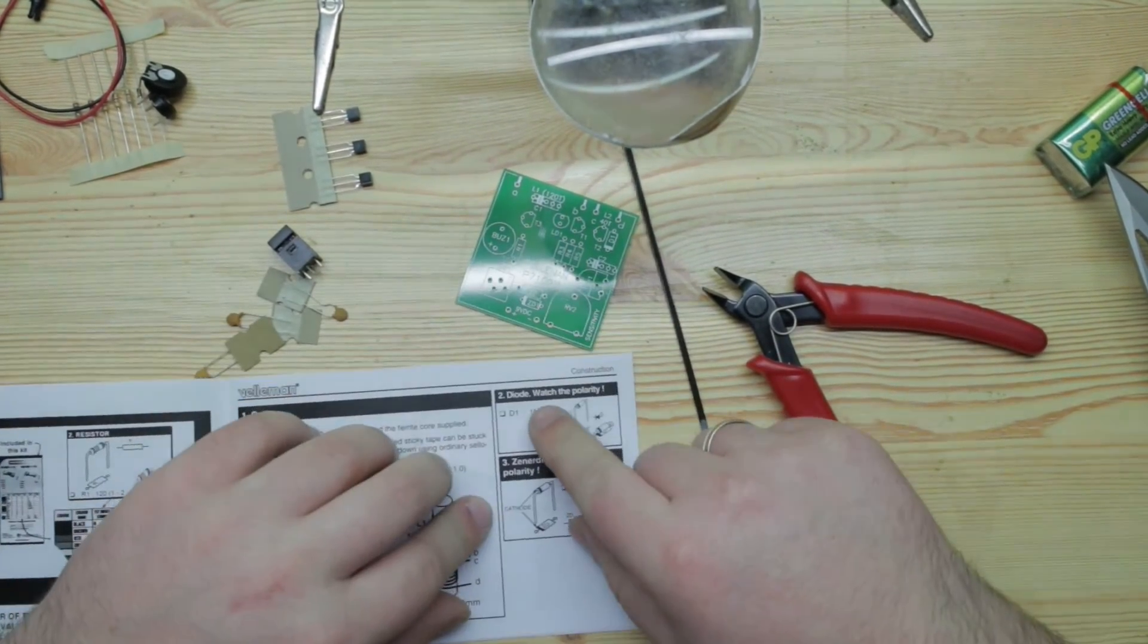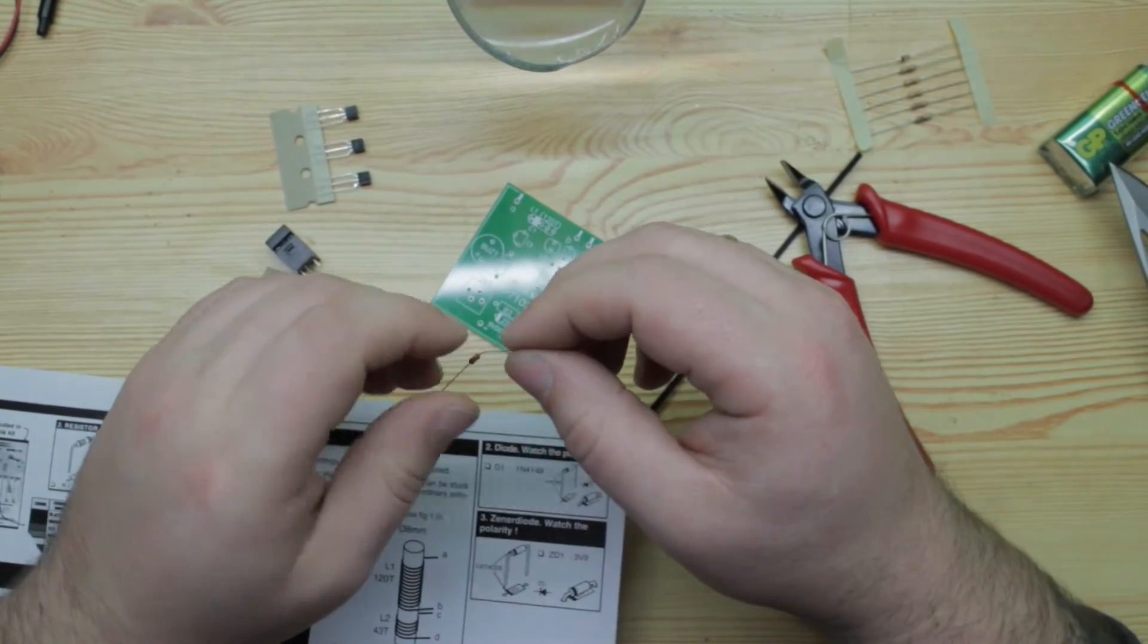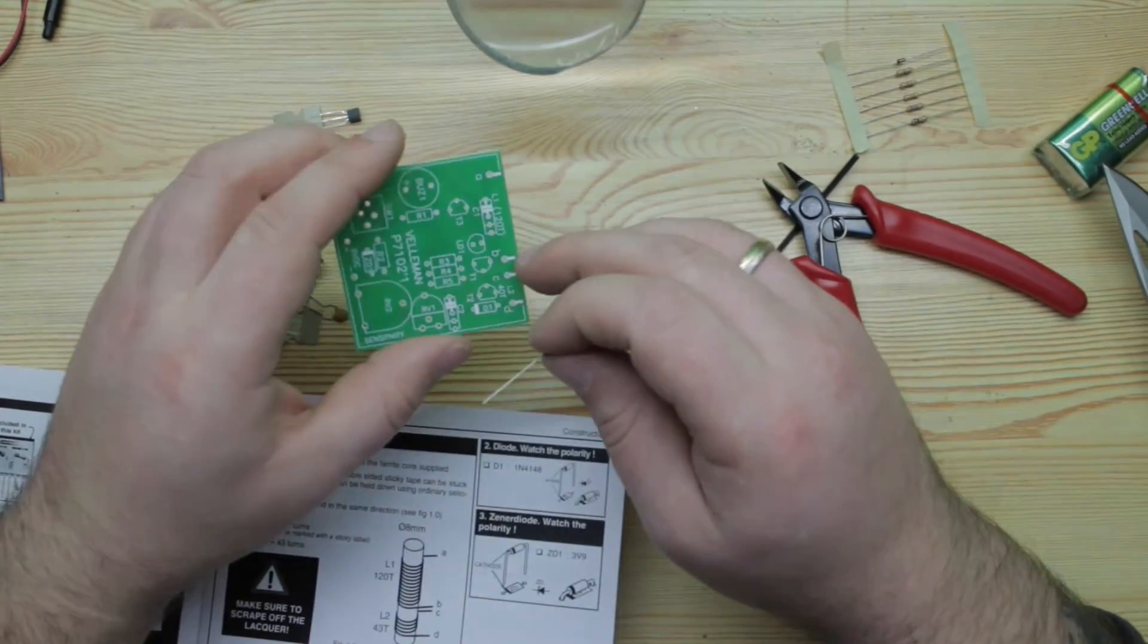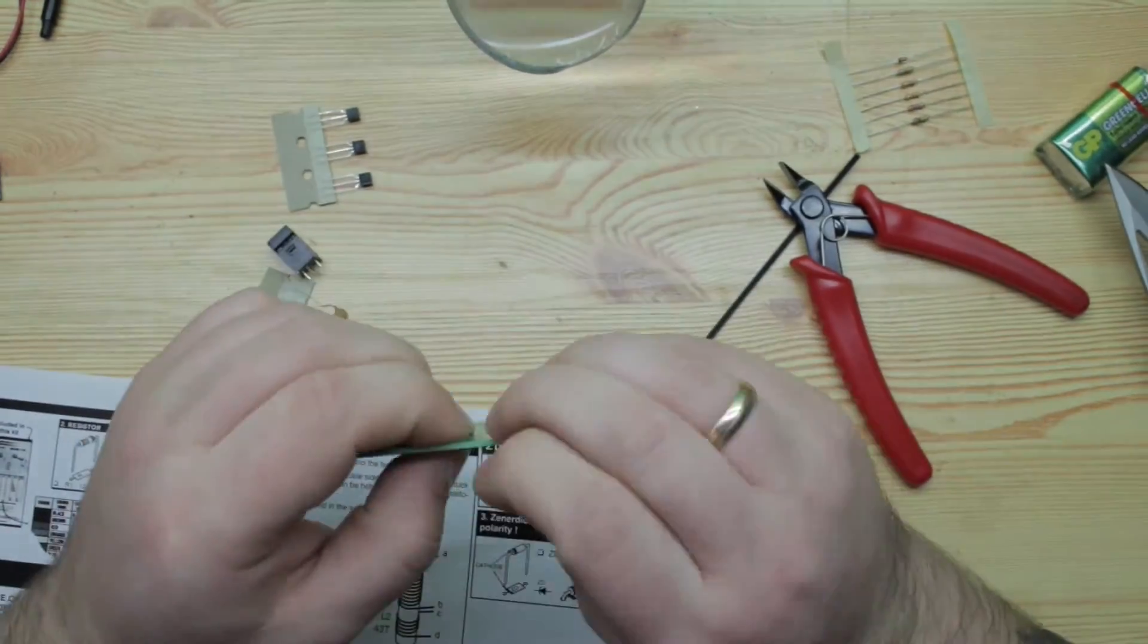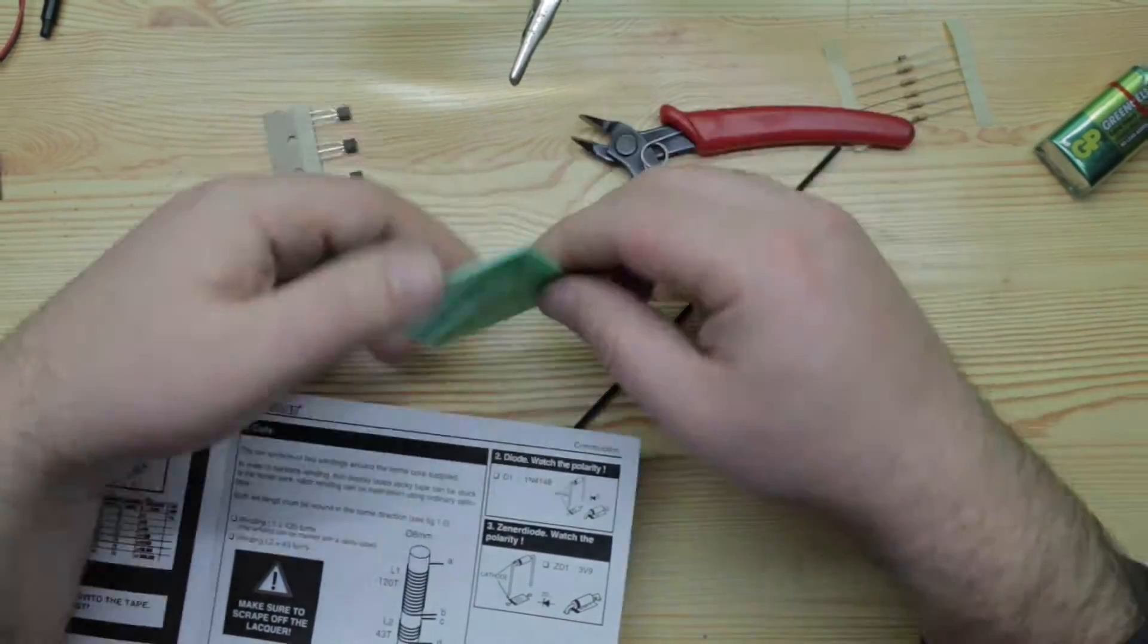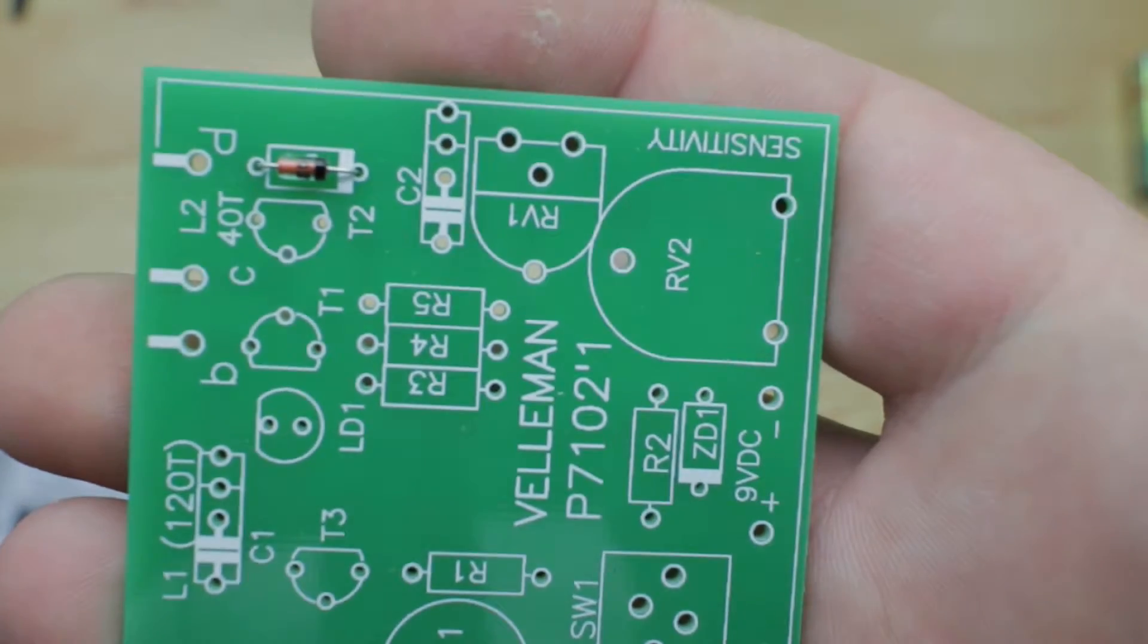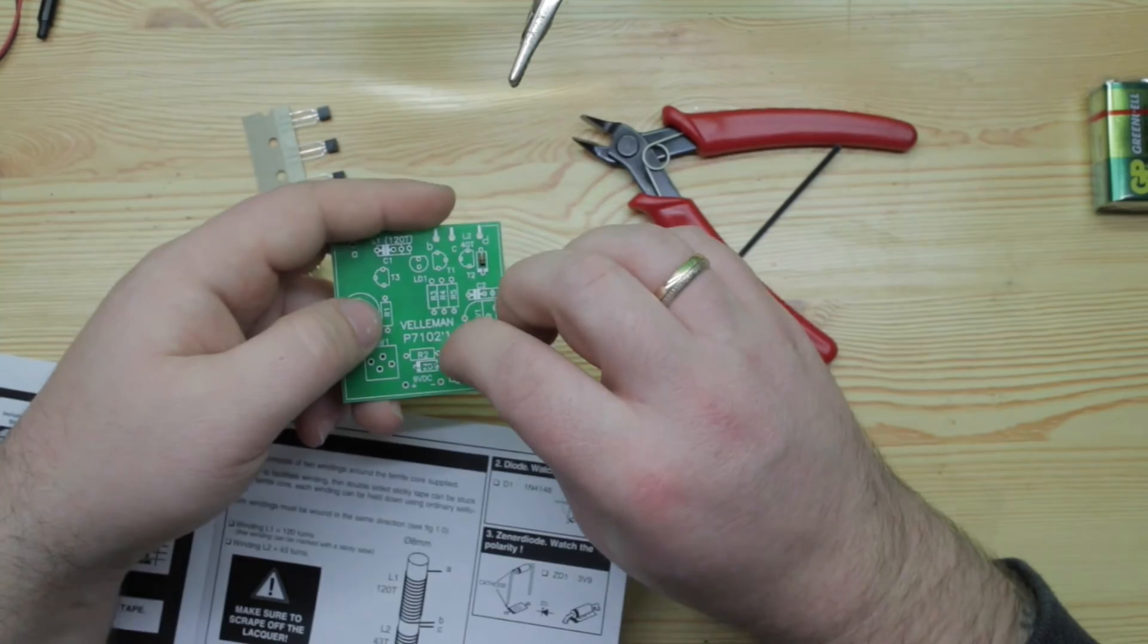Second, we need to install the diode. Let's take the diode and it should go into D1. Right here we have D1. Trim the lead. Zener diode - once again make sure that mark corresponds to the mark on the PCB.